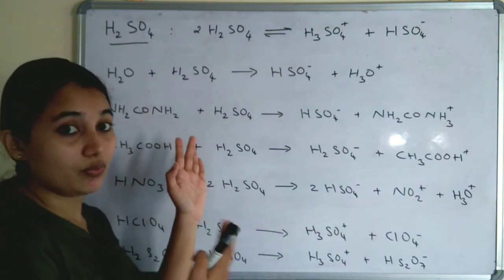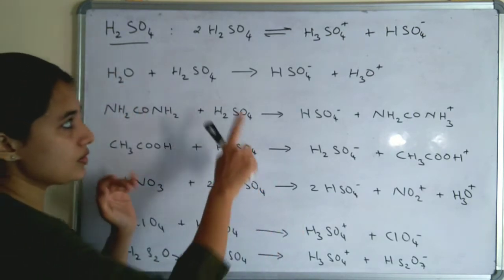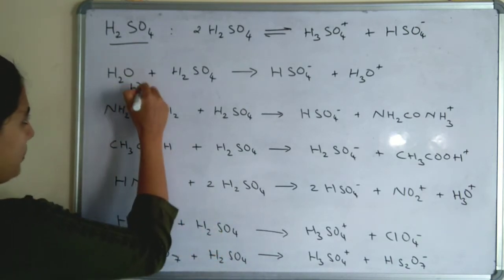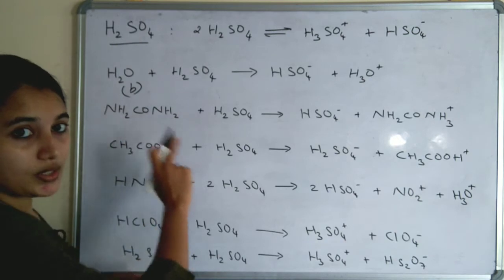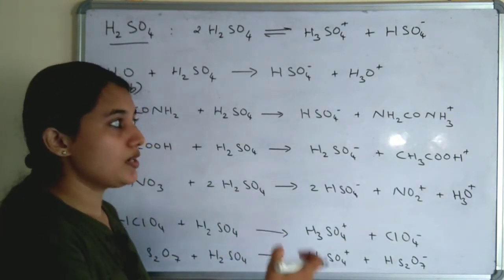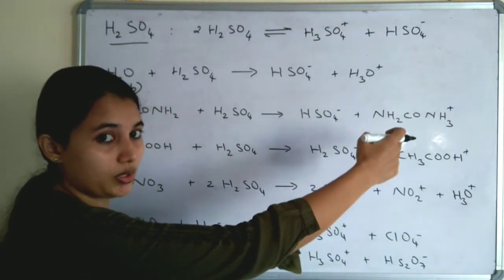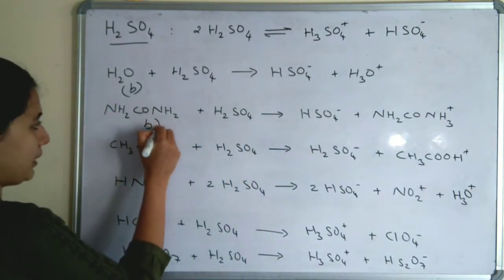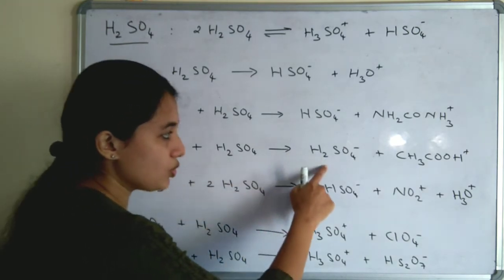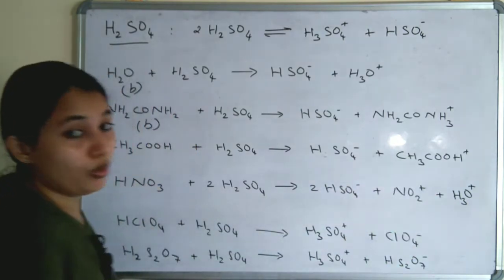We will see in which cases sulfuric acid acts as a base. In the first case with water, sulfuric acid is an acid and water is a base. Urea (NH2CONH2) + H2SO4 → HSO4⁻ + NH2CONH3⁺ — a proton is accepted by urea, so urea is a base. Acetic acid + H2SO4 → HSO4⁻ + CH3CO⁺.